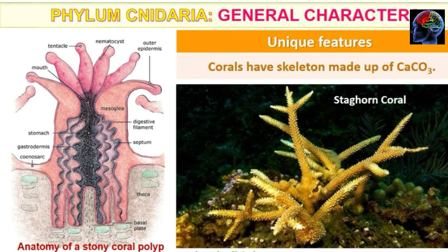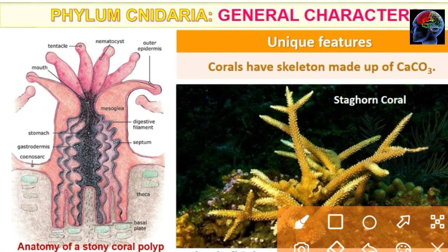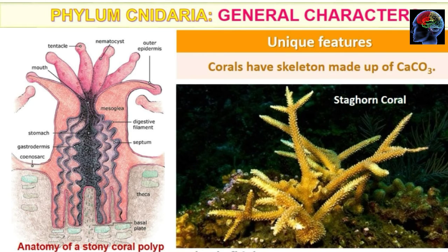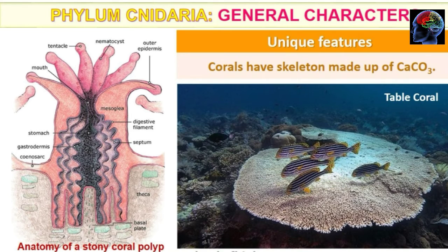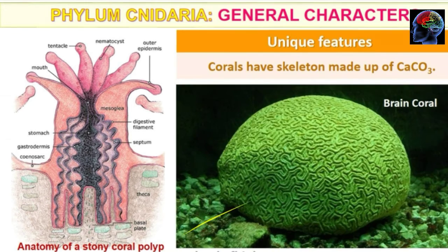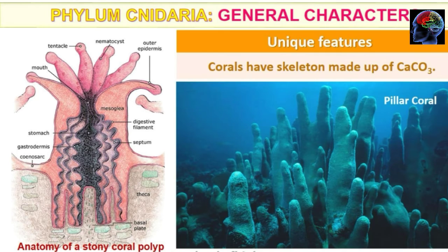Corals have skeletal structures made up of CaCO3. There is the staghorn coral, which is shaped like a stag's horn. There is also the table coral, which has a table-like structure. The brain coral is called brain coral because of its brain-like appearance. And there is the pillar coral, which has a pillar-like structure.